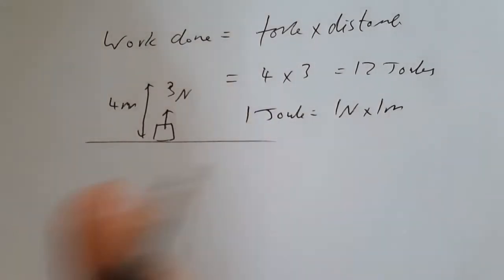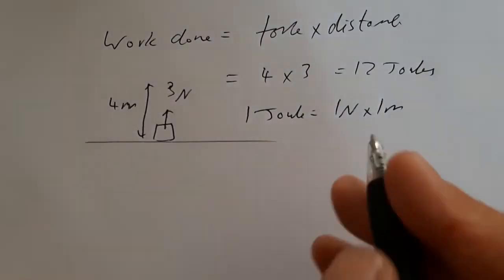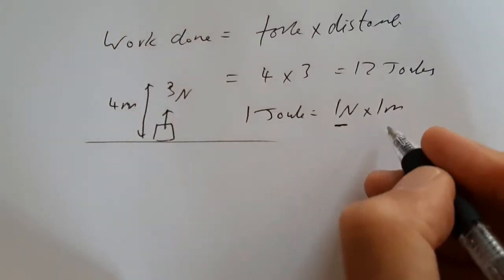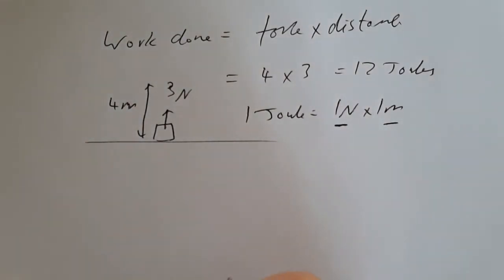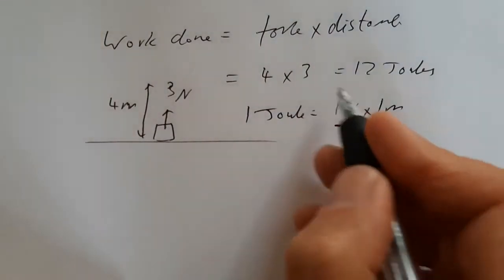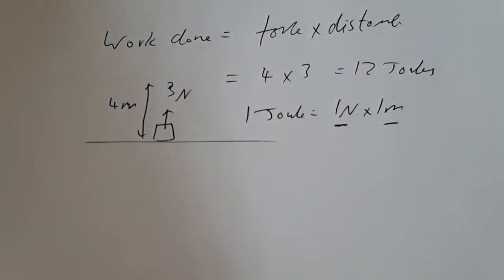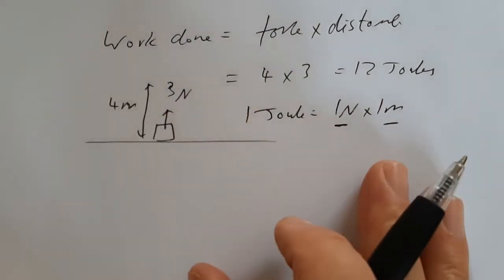Each joule in the end is defined in that same way as one newton by one meter. These are the units of force newtons. These are the units of distance meters. You could, in theory, write it as newton meters, but you'll see later we use newton meters for something else. And that would be potentially confusing.